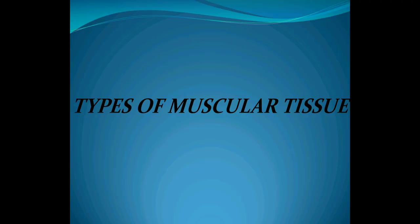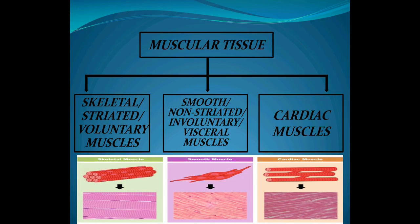There are three different types of muscular tissue. First are skeletal muscles, also called striated muscles or voluntary muscles. They are striated because they contain dark and light bands. They are called voluntary because they help in doing voluntary activities. They are called skeletal muscles because they are attached to the skeleton or bone.